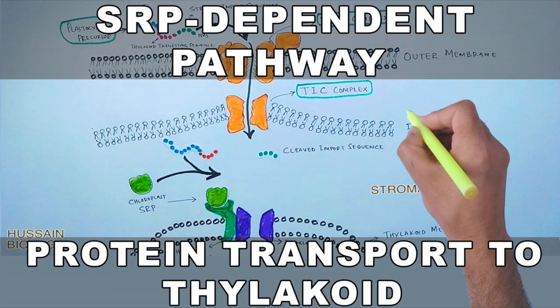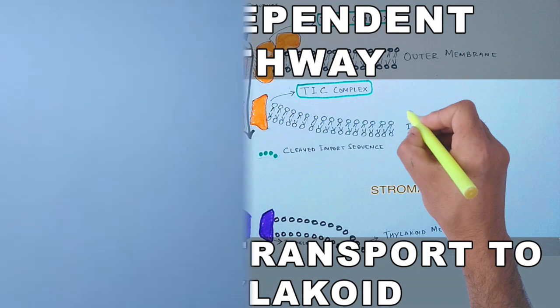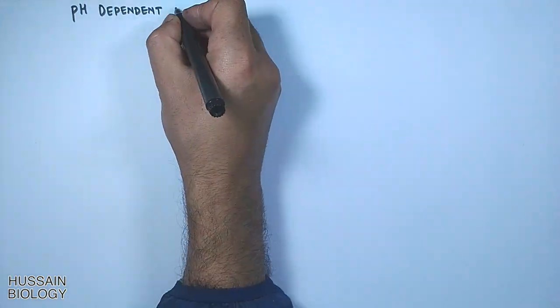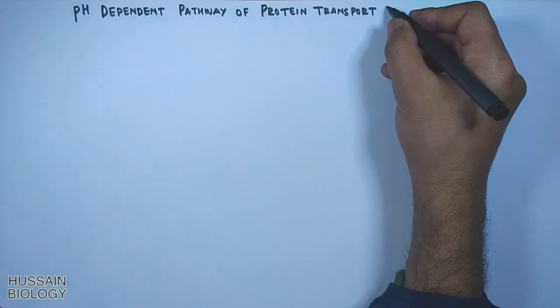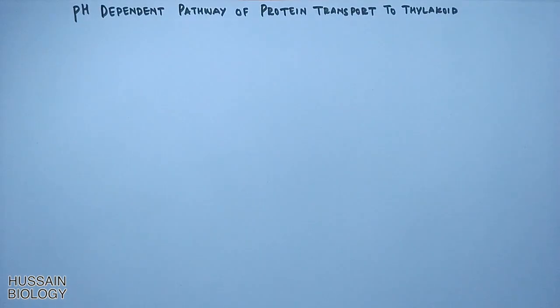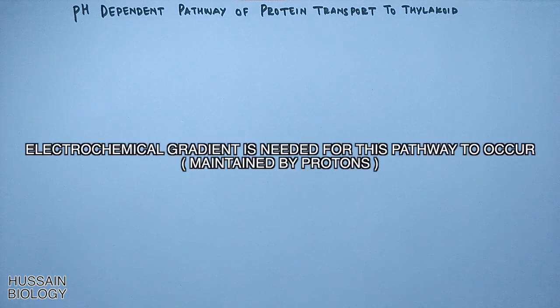In the previous video we discussed the SRP pathway of protein transport to thylakoid. In this video we'll be discussing the pH-dependent pathway of transporting proteins to thylakoid. It is called the pH-dependent pathway because this process is powered by the electrochemical gradient which is maintained across the thylakoid membrane.